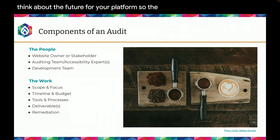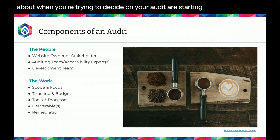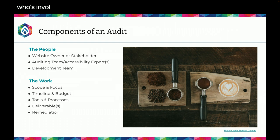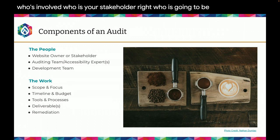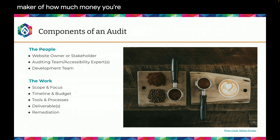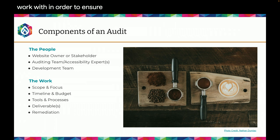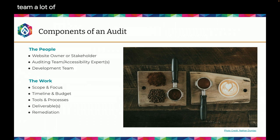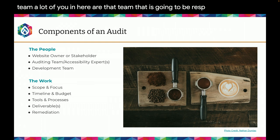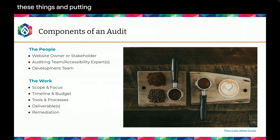The things you need to think about when deciding on your audit start with the people. Who's involved? Who is your stakeholder — the decision maker on how much budget you'll get to audit and remediate your platform? Who is the auditing team or accessibility expert you'll work with to ensure compliance? And then you need your development team — many of you in here are the team responsible for taking these findings and putting them into action.